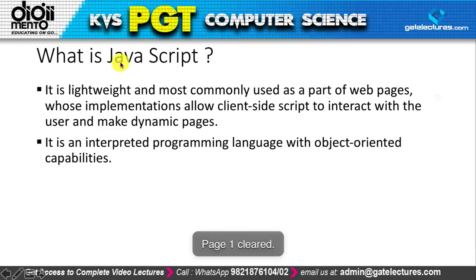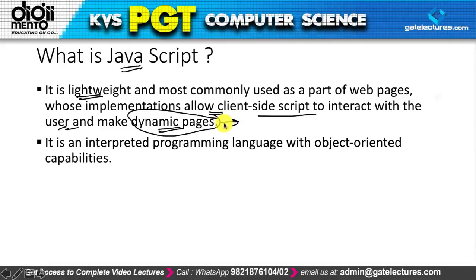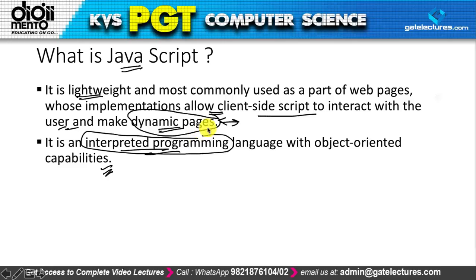JavaScript is a lightweight language most commonly used as part of web pages, where it allows client-side scripts to interact with the user and make dynamic pages. It is an interpreted programming language with object-oriented capabilities. So what exactly is an interpreted programming language?